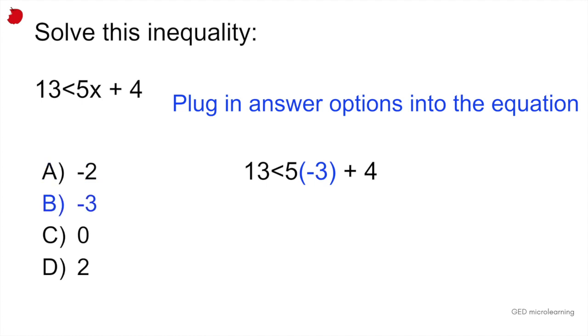If we do the same thing for option B, plug in minus 3 where the X should be. That gives you minus 15 plus 4, which is equal to minus 11. Again, 13 is not less than minus 11. So option B is incorrect.